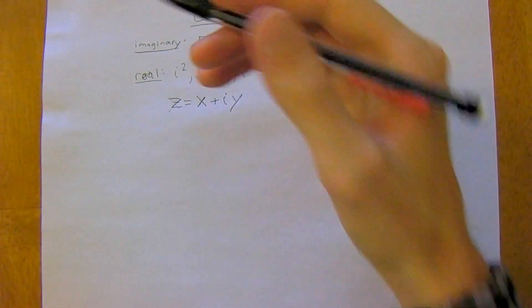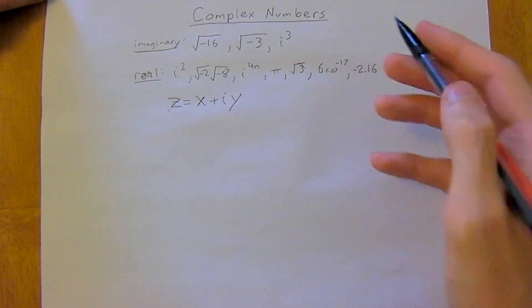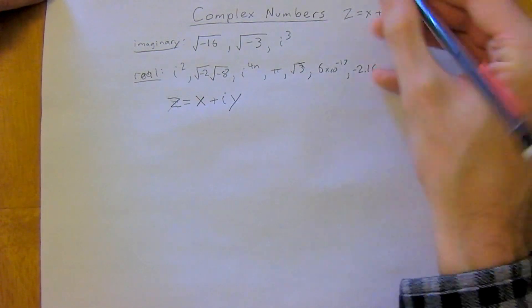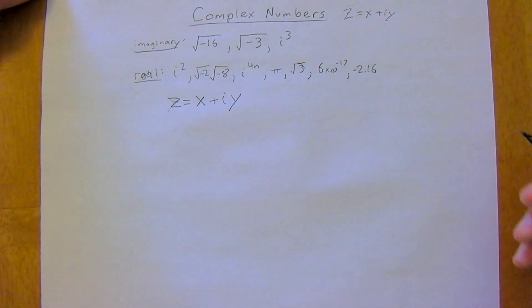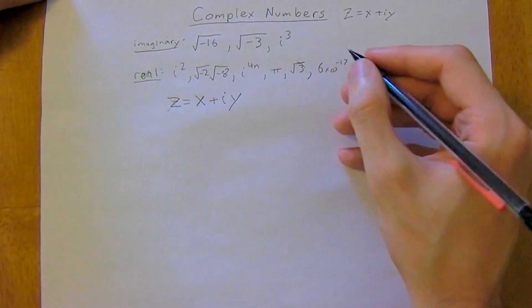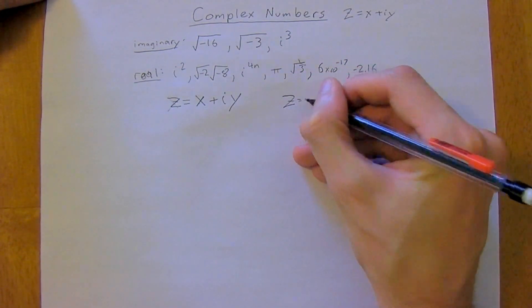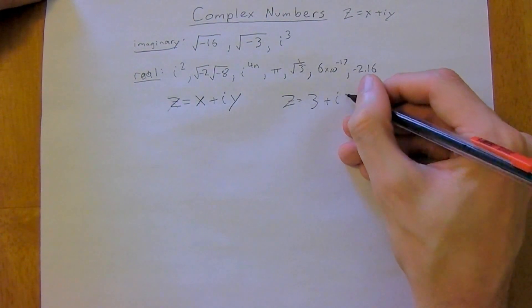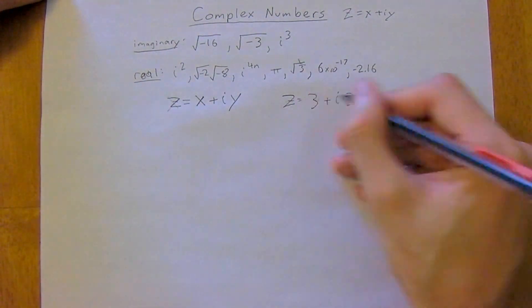So an example of a complex number—z equals x plus i y, you should memorize this because this will come up time and time again. So an example is z equals 3 plus i 2, or you could write that 2i, really doesn't matter either way.